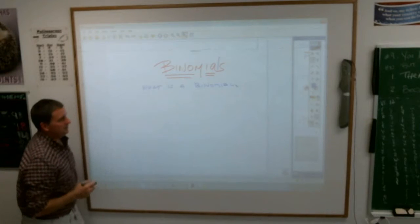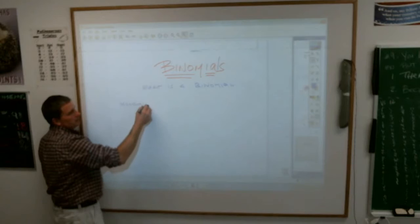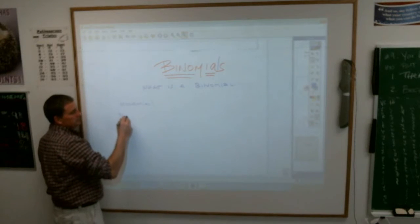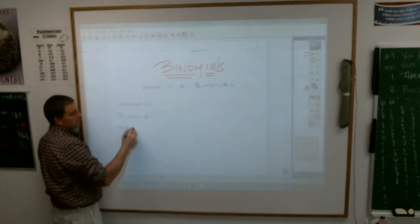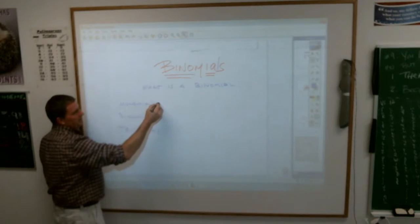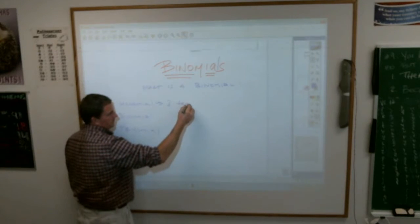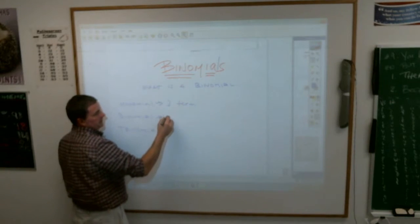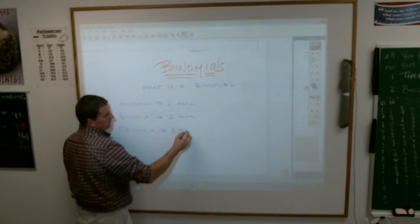Well, let's just talk about this. We have what's called a monomial, we have a binomial, and we have a trinomial. Just like with bicycles, tricycles, and we don't call it a monocycle, we call it a unicycle. A monomial is just a one term thing. A binomial is a two term thing. And a trinomial is a three term thing.